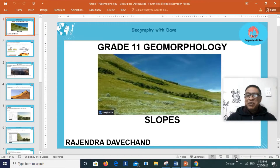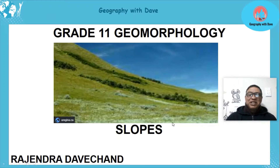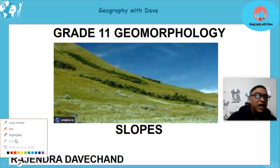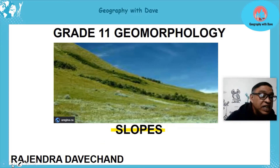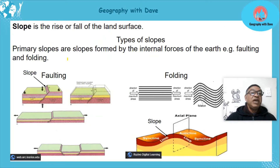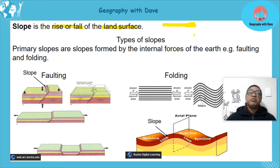Hello learners, hope you are keeping well. Today we're going to look at the concept of slope as part of your Grade 11 geomorphology. A simple definition of a slope is the rise or fall of the landscape. If it's horizontal it's not a slope, but if it sits at an angle, that is a slope.